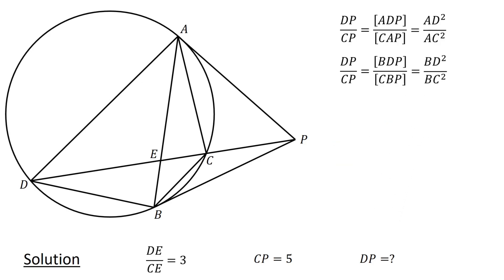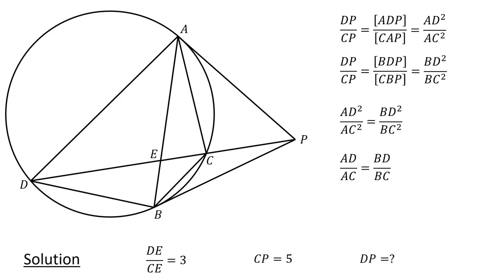From the two equations, we thus have AD squared over AC squared equals BD squared over BC squared, or after taking the square root, AD over AC equals BD over BC.